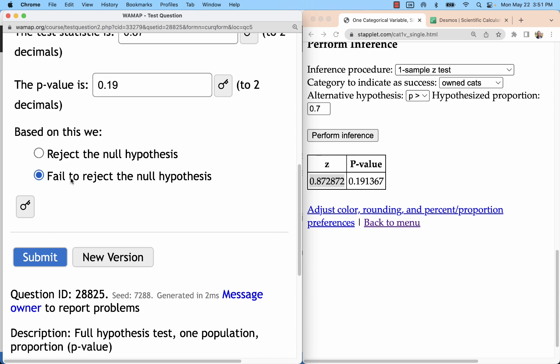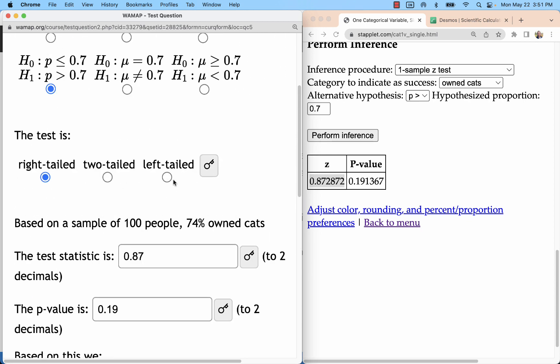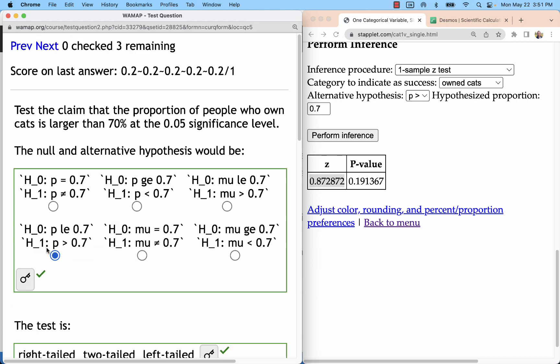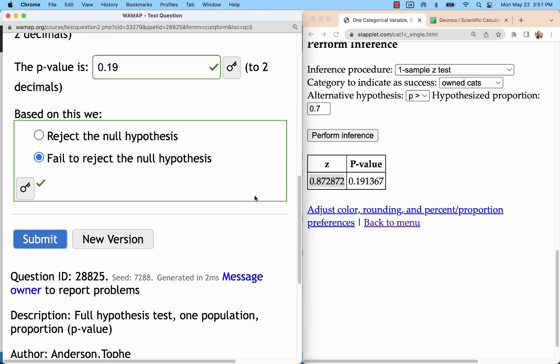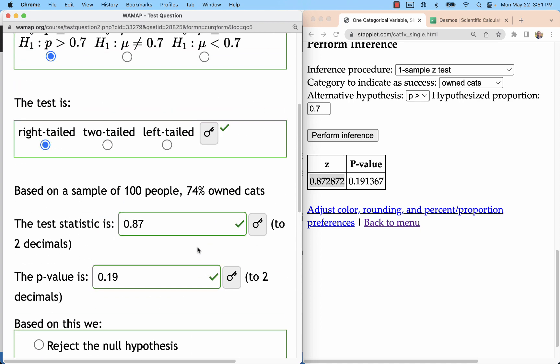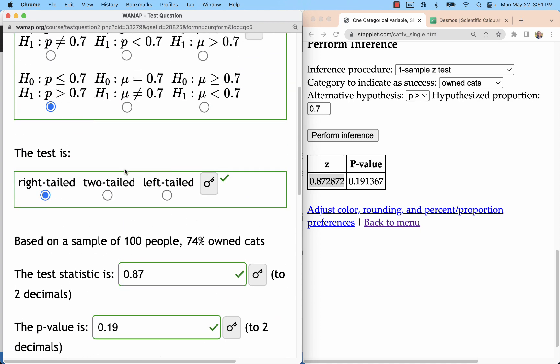So, I will fail to reject. And on this one, you don't have to do the entire conclusion. They kind of added a little bit more at the start and took away that last step. But we would say we don't have enough evidence to support that claim that it's more than 70%. So, that's that.